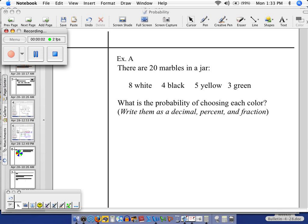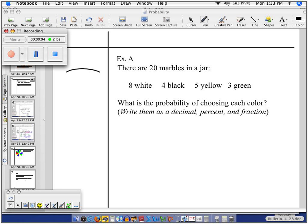So in example A, what we have here to illustrate is you have a jar. And inside this jar are different colored marbles. But there's 20 of them. I don't have the time to draw all of them, but you understand my illustration.